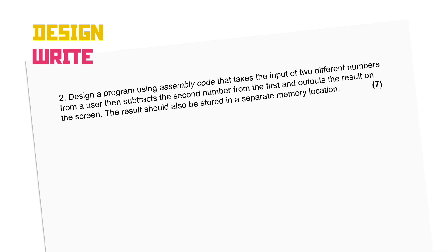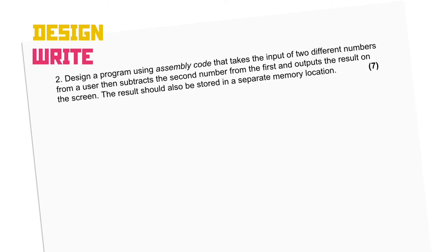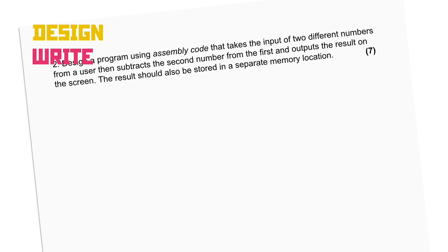Let's try that method again but with something a bit more complex. As soon as a question involves input of more than one value, the complexity increases massively. We start by breaking it down and turning the question into a series of instructions in the right order, then we'll add line numbers, and finally pop those line numbers where they're needed in the operands. The question wants us to take the input of two different numbers, then subtract the second from the first and output the result. There's a little knack to this: if we're taking input for two values and storing them, we need two lots of INP and two lots of STA straight after each other.